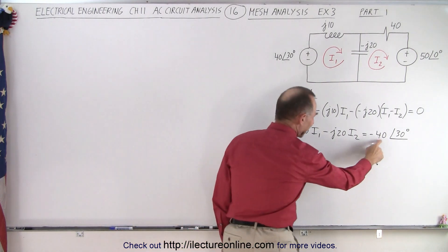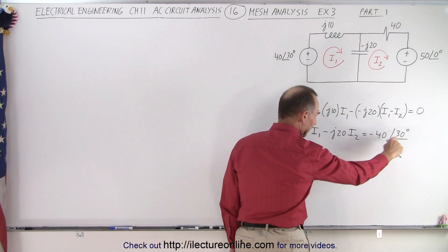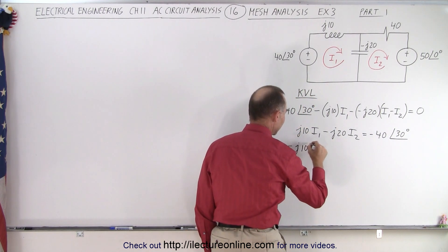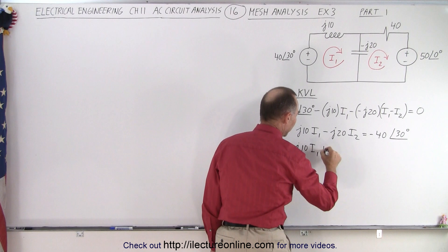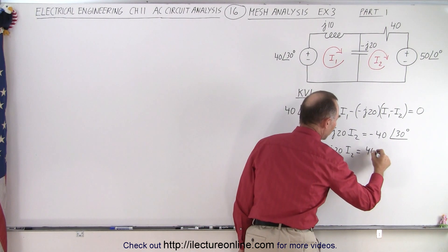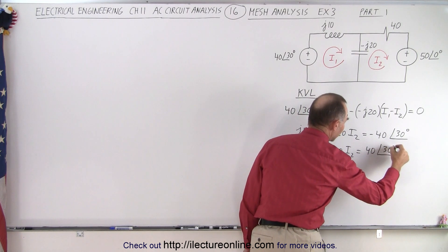I don't like this to be negative. So I'm going to multiply everything by a negative sign to make that into a positive. So it gives me minus J10 I1 plus J20 I2 equals a positive 40 with a phase angle of 30 degrees. And it's all positive, just easier to work with.